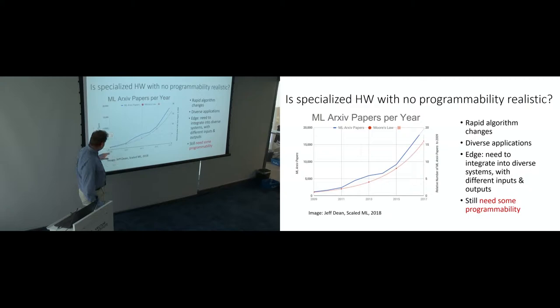So this is data from Jeff Dean of Google, and it's showing in the blue curve, well, let's start with the red curve. The red curve is Moore's Law. So how many more transistors can we fit on a chip over time? And this is actually optimistic. Moore's Law is slowing down. This is showing a doubling every two years, which we're no longer achieving. So we're not quite doing as well as that. But the blue curve, which is growing more quickly, are machine learning archive papers per year. So currently machine learning researchers are generating algorithmic results faster than Intel is generating transistors. It's kind of an amazing achievement. This really highlights there are rapid algorithm changes. It would be, it's not a feasible thing to commit to silicon that has no programmability, no ability to adapt.